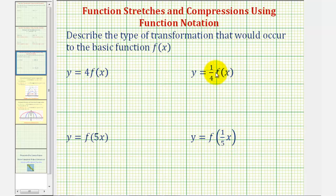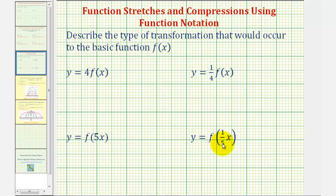Looking at these first two, notice how we're multiplying f of x by a constant, where f of x would be the function values, or y values. And since y values lie on the vertical axis, these two will either give us a vertical stretch or a vertical compression. But for the next two, notice how we're multiplying x by a constant, which will affect the input of the function. The inputs lie along the horizontal axis, so these two will give us either a horizontal stretch or a horizontal compression.